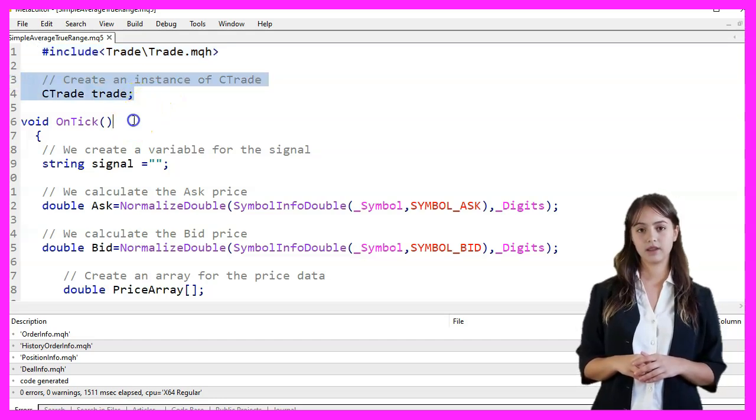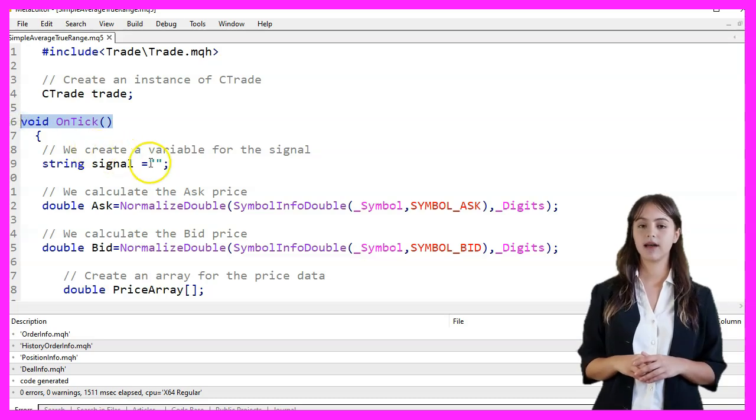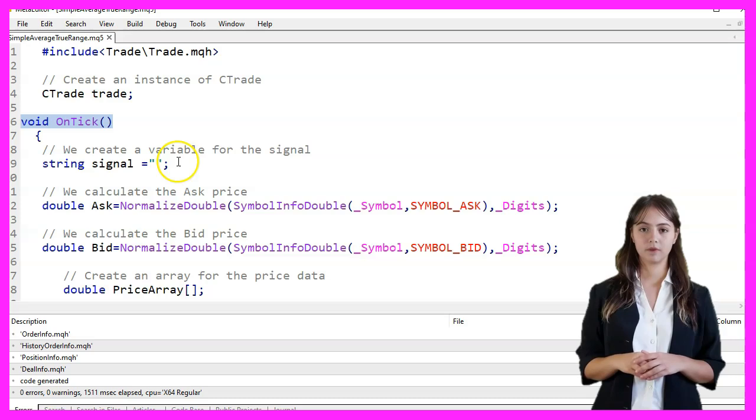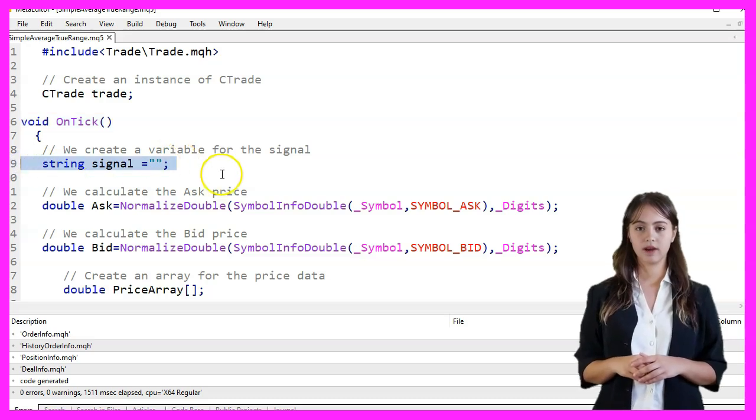In the OnTick function, which is called every time there is a price change, we start by creating a variable named Signal to store our trading signal.